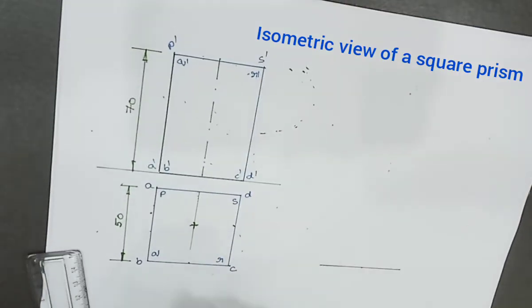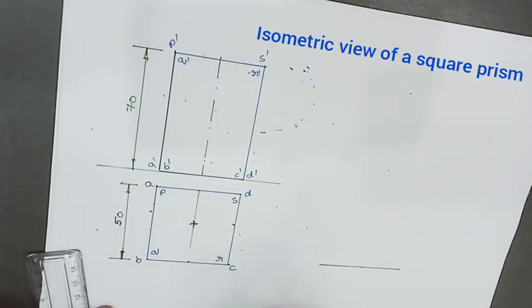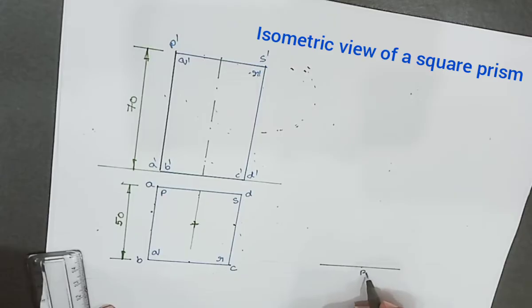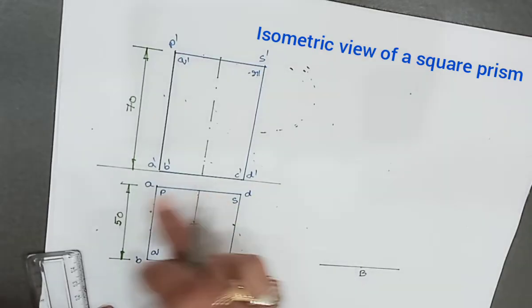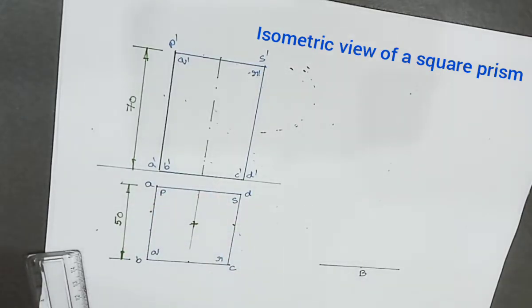After that we have to decide whether to fix point B on the ground or C on the ground. I am fixing point B. As all four sides are parallel to the horizontal plane, then all four sides need to make an angle of 30 degrees to the ground line.